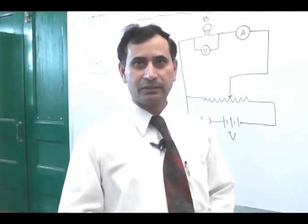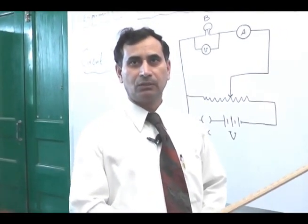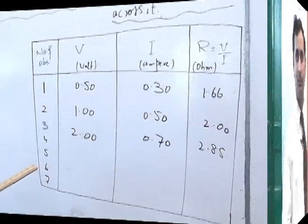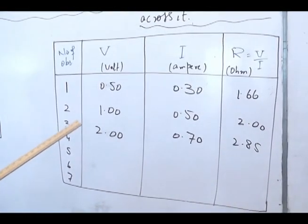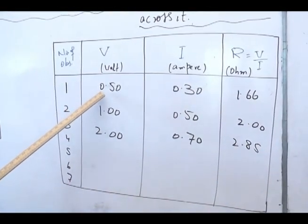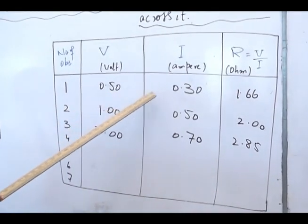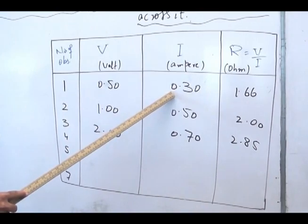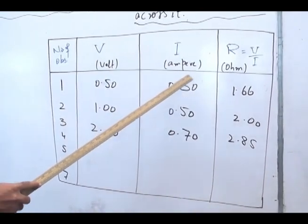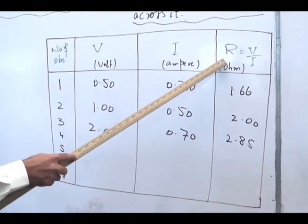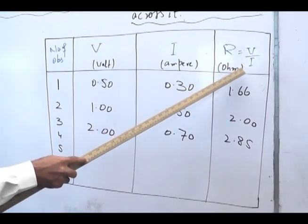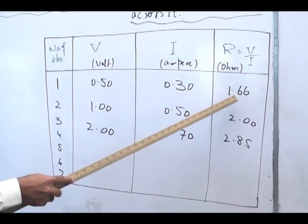With the help of this apparatus, we have taken three readings as shown on the whiteboard. Now with the help of potential divider circuit, we fixed the voltage as 0.5 volt. The corresponding current was 0.3 ampere and here resistance is equal to V over I, that is equal to 1.66.